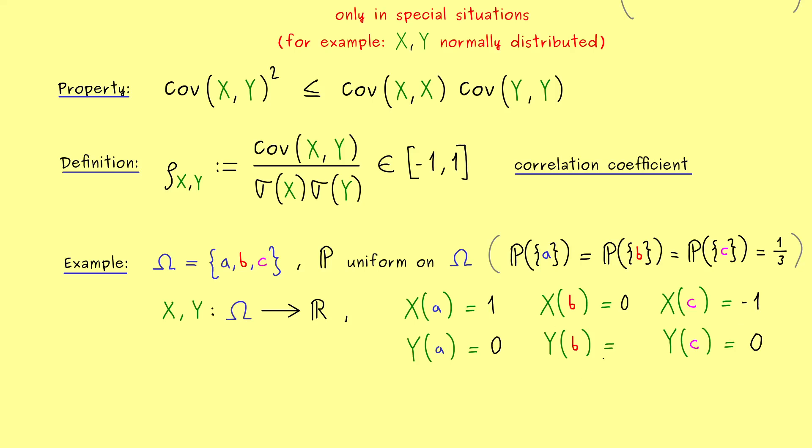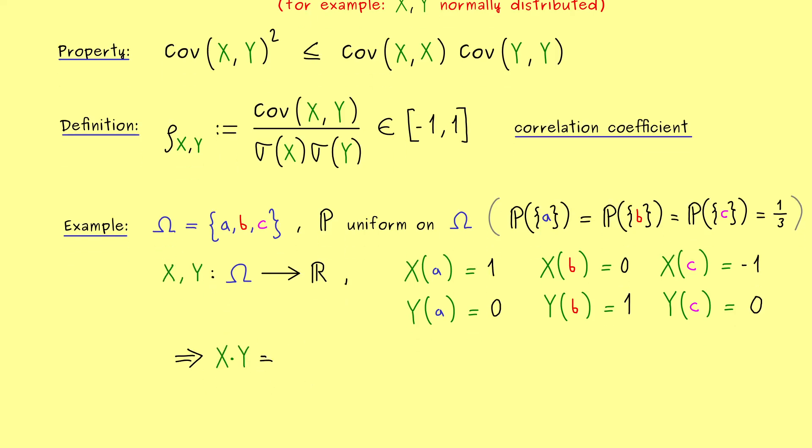Hence, only for B we can have a non-vanishing value. Hence, this means that the new random variable given by X times Y is simply the 0 function. Therefore, also the expectation of this random variable will be equal to 0. However, also by construction the expectation of X is equal to 0. So by using the formula above, we conclude that the covariance between X and Y is equal to 0.